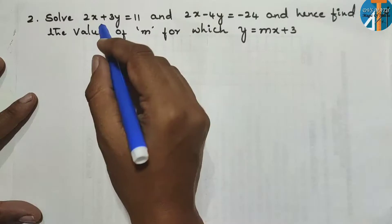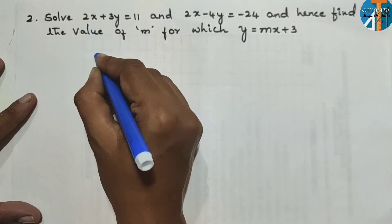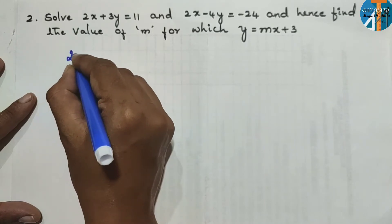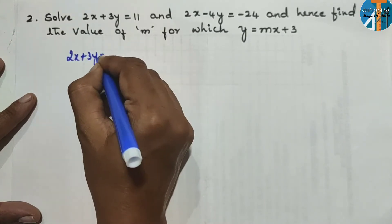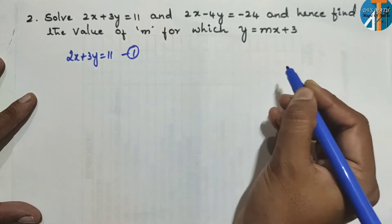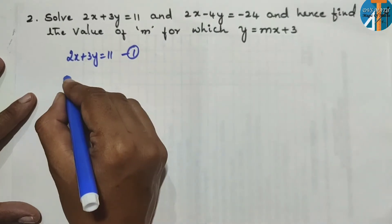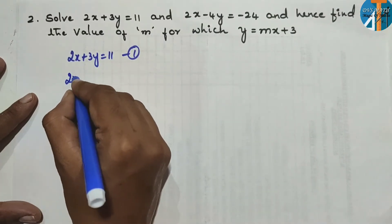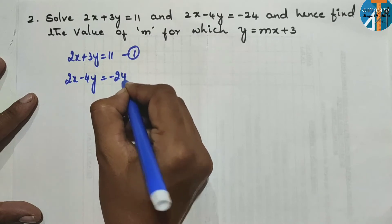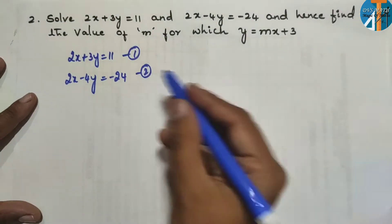Let's begin by taking two equations. The first equation is 2x + 3y = 11 — consider it as equation 1. The next equation is 2x − 4y = −24 — consider it as equation 2.